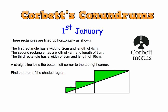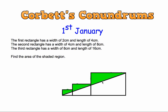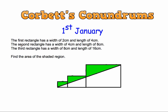Let's have a look at the answer to this question. I've got the sketch and I'm going to label the measurements on the diagram. The first rectangle has a width of 2cm and length of 4cm. The large one has a length of 8cm and a width of 4cm. The largest has a length of 16cm and a width of 8cm. To find the shaded area, we're going to find the area of all three rectangles, then find the area of the white triangle. If we take the area of the white triangle away from the total area, we'll be left with the shaded area — the green region.